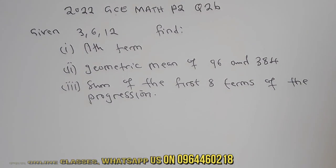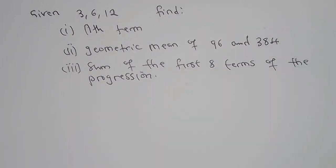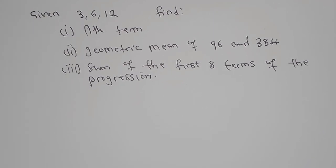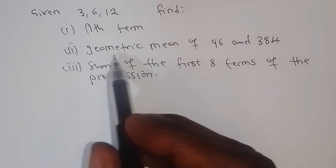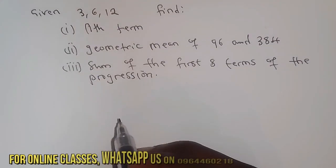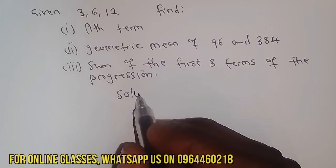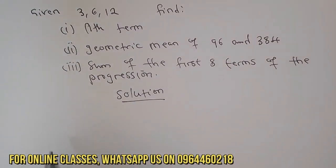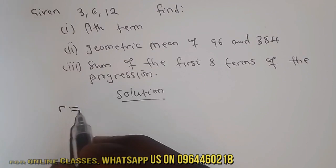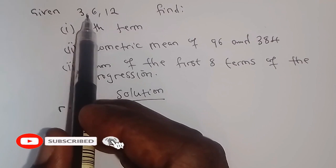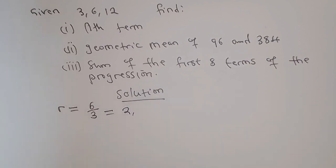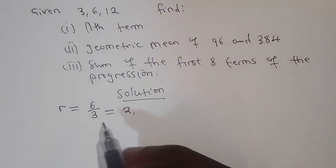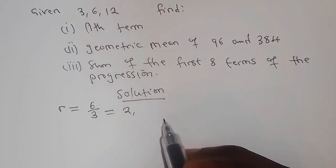So how can you go about this question? The most important thing is to recognize that they have already told you this is a geometric progression (GP). In a GP, you need to find the common ratio r, which equals the second term divided by the first term. So it's 6 divided by 3, which gives you 2.